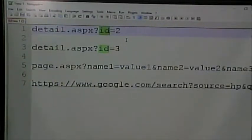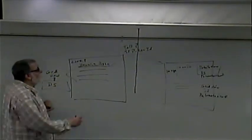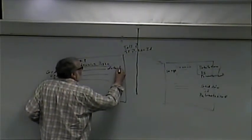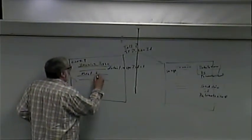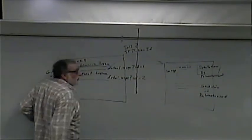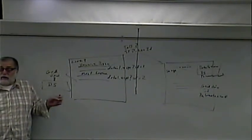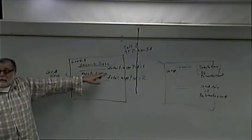So that's how we're going to pass data between these two things — on the query string. This link is going to be slightly different for each pizza: the page name stays the same, but the query string changes. For Hawaiian pizza, the link will be detail.aspx?id=1. For meat lovers pizza, detail.aspx?id=2. Whatever the ID is from the database, we plug that in as part of the query string.